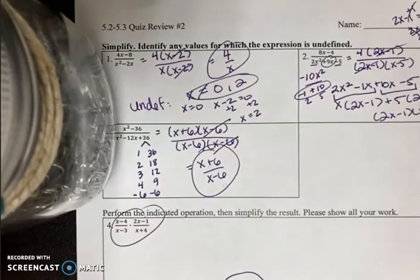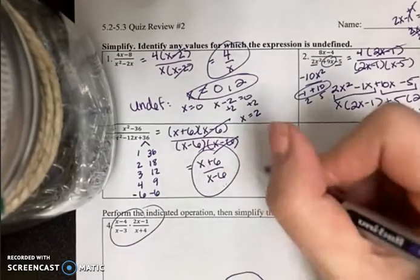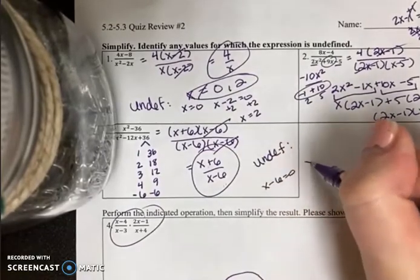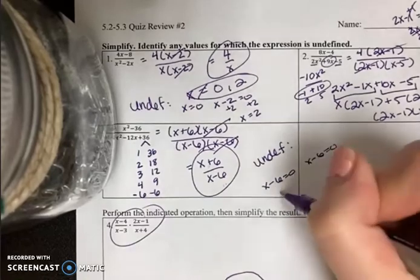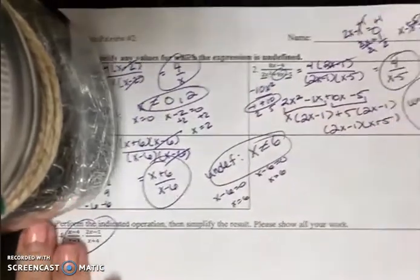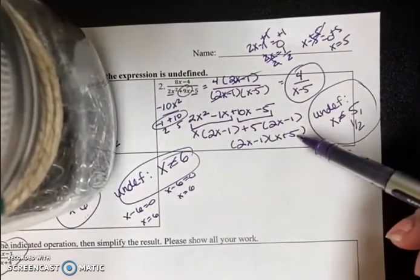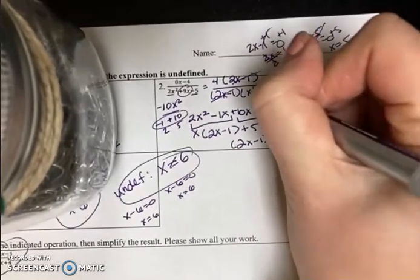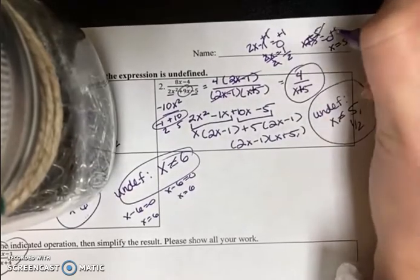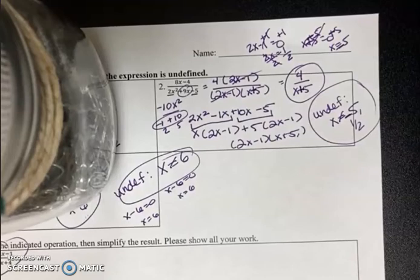Before I move on to the next page, I realized when I was about to switch it over, I never said when it was undefined for number 3. So it is undefined when I set each equal to 0. When I set x minus 6 equals 0 and x minus 6 equals 0, we're going to end up with 6 both times. You don't have to write it twice. All you have to say is x cannot equal 6. Also, another small thing, number 2, I have no idea why I did this, but I had it right here. However, when I rewrote it, I put x minus 5 instead of x plus. So it should be x plus 5, which means that x cannot equal a negative 5. Sorry about that. I was just going too fast because I want to get this all done. And let's look at the next page.